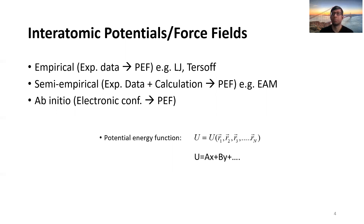Interatomic potentials are a functional form of the potential energy that defines how atoms interact with each other in a system. In a protein, for example, there are many residues interacting — with bonds, angles, dihedrals, and non-bonded interactions — and we want to define all of that by a functional form in terms of potential energy. That collection of terms is called a force field. From a materials science perspective, the same applies to a polymer whose atoms interact through bonds, dihedrals, angles, and non-bonded interactions.